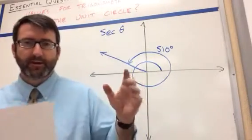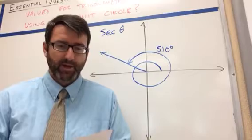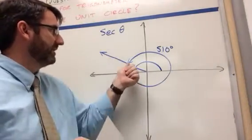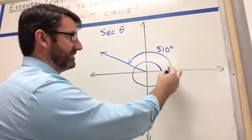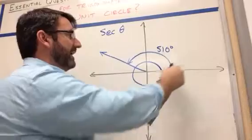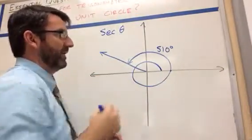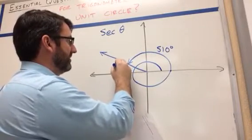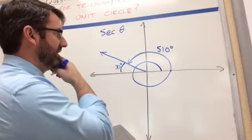Number one: we have the angle 510 degrees and we're asked to find the secant of that angle. First, we're going to find the reference angle — the smallest angle we can make with the x-axis. Going all the way around is 360 degrees, and one and a half turns is 540 degrees (360 plus another 180). So 540 minus 510 gives us a reference angle of 30 degrees.